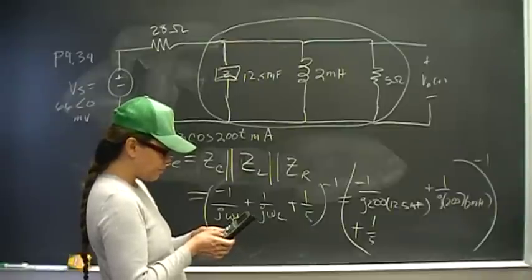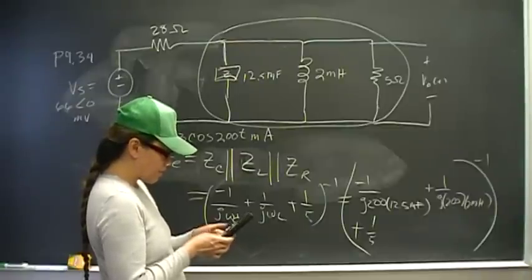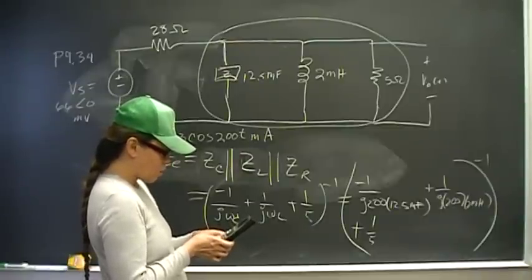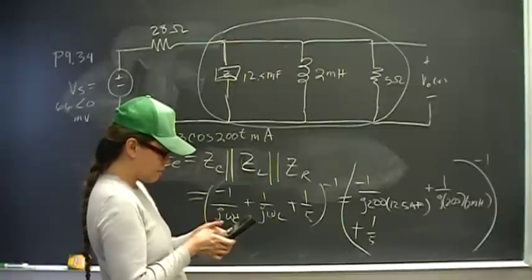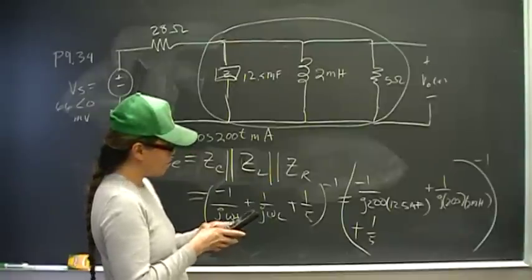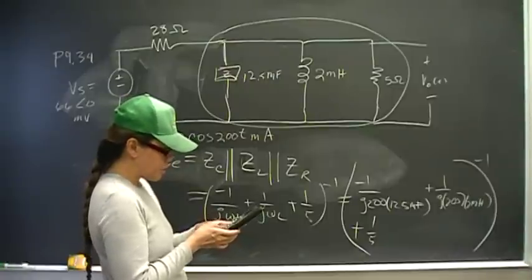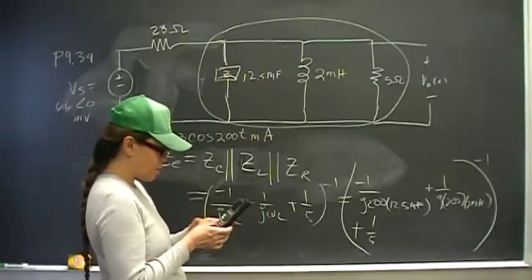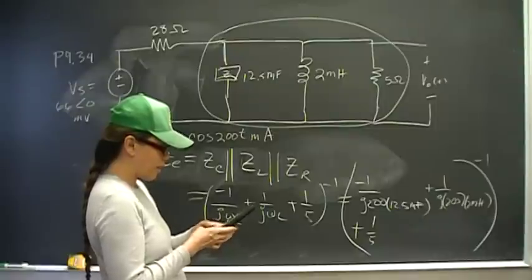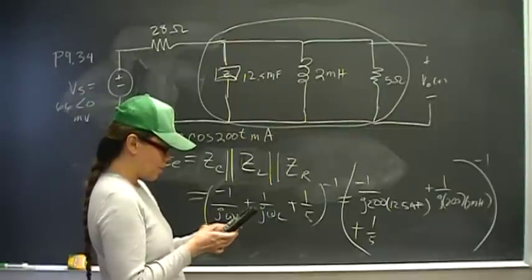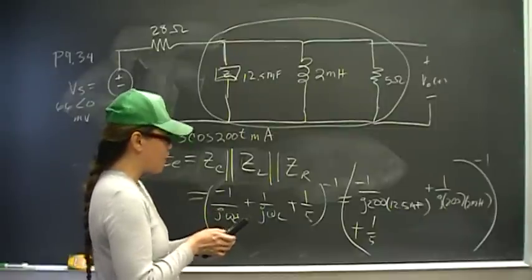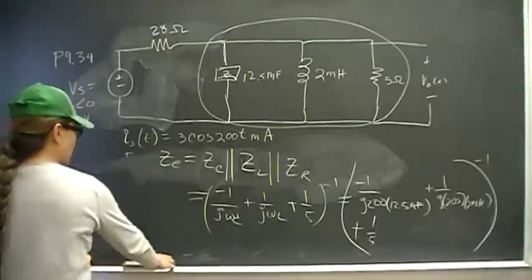1 divided by quantity i, escape, 200 times 2 times 10 raised to the negative 3, plus 1 divided by 5, enter, raise that to the negative 1st power, and you get an answer of 5 ohms.